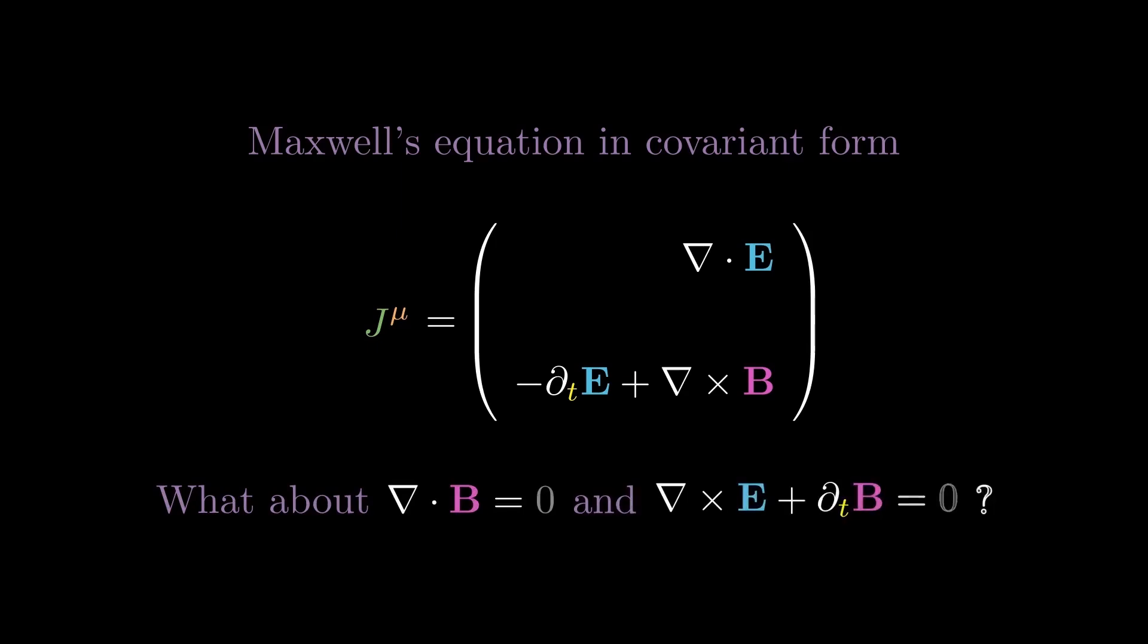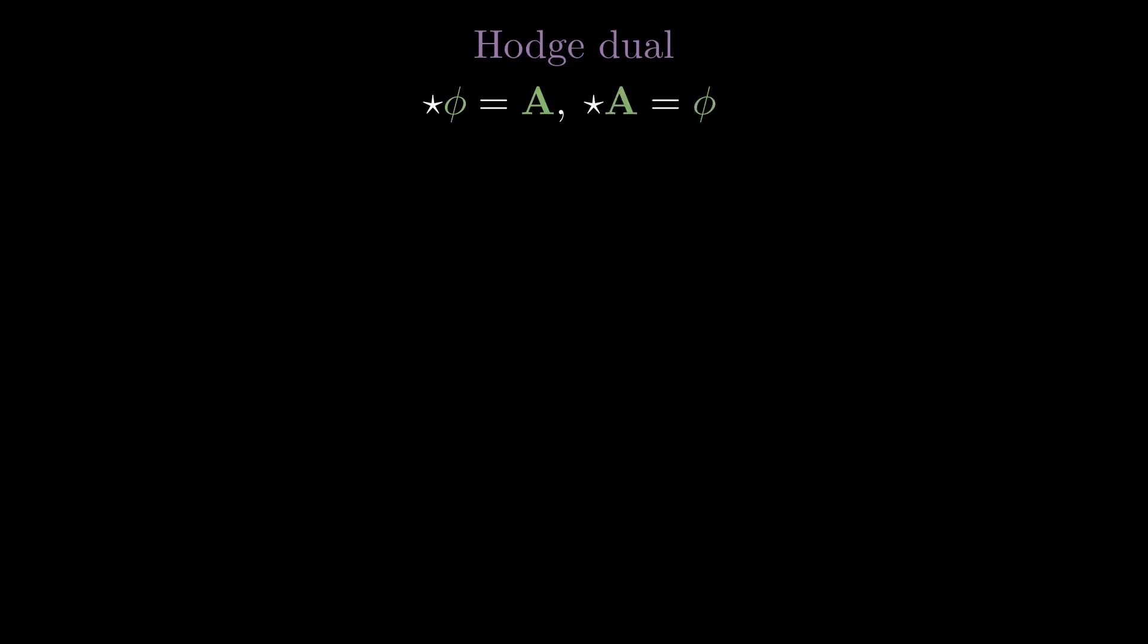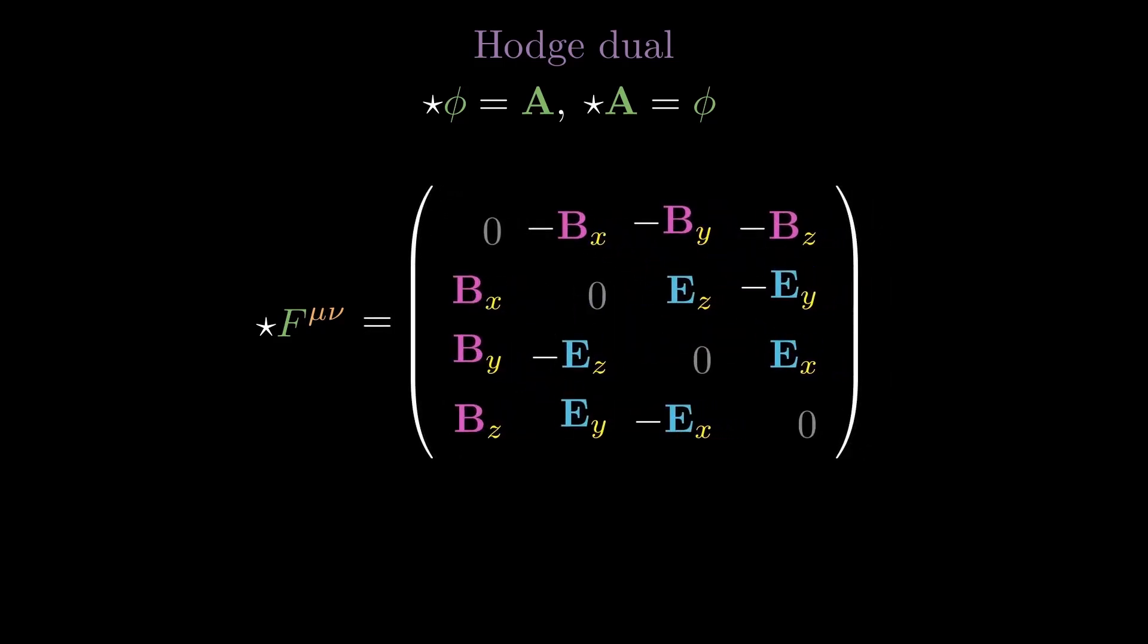But what about the other two? It turns out that in the mathematics of spacetime, every field has what is known as a Hodge dual, defined such that the dimension of a field and its Hodge dual sum up to 4. The Hodge dual of the scalar potential is the 3-vector potential and vice versa. If we take the spacetime derivative of the Hodge dual of the electromagnetic field tensor, we can recover the latter two of Maxwell's equations.